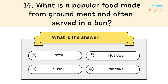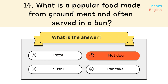Question 14: What is a popular food made from ground meat and often served in a bun? Answer 2: Hot dog.